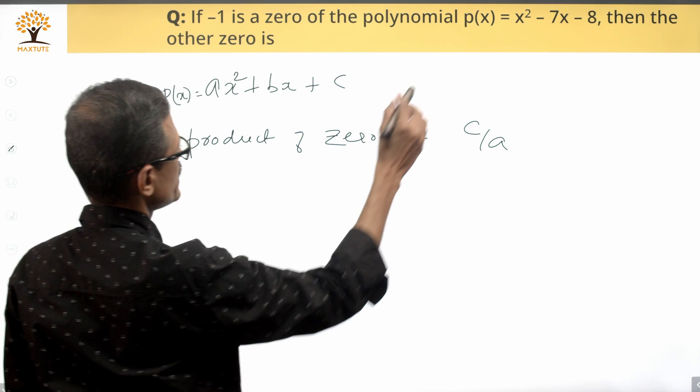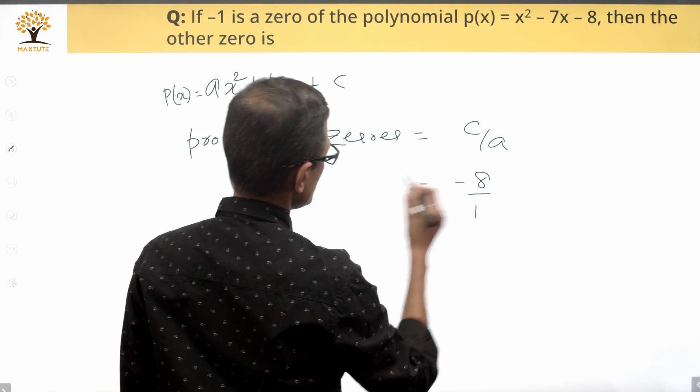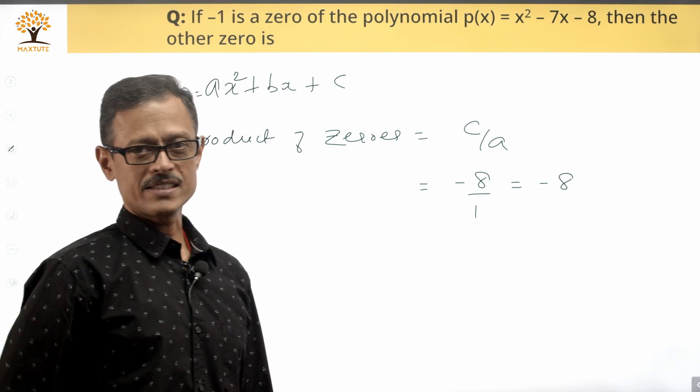Now in our case what would that be? c is equal to minus 8, a is equal to 1. So the product of the zeros for us is equal to minus 8.